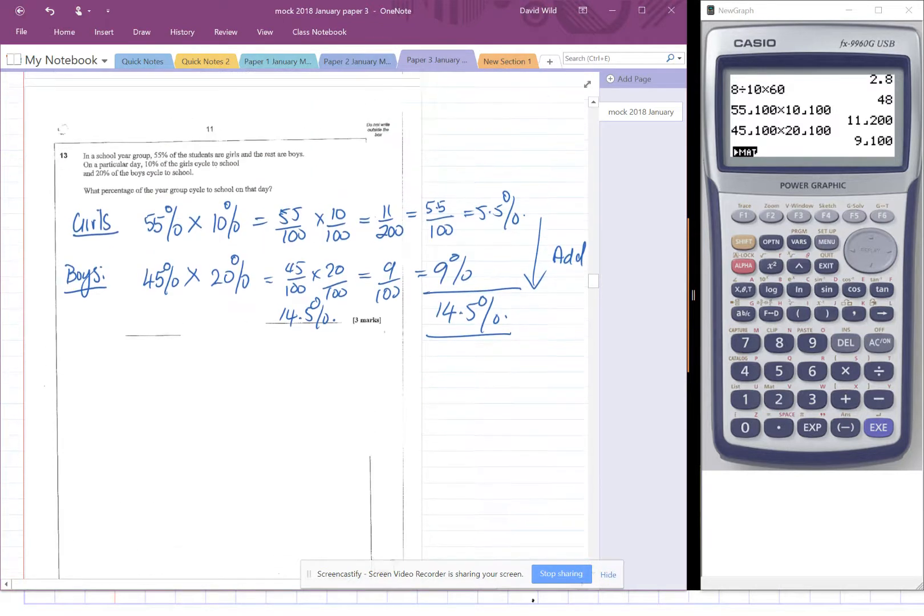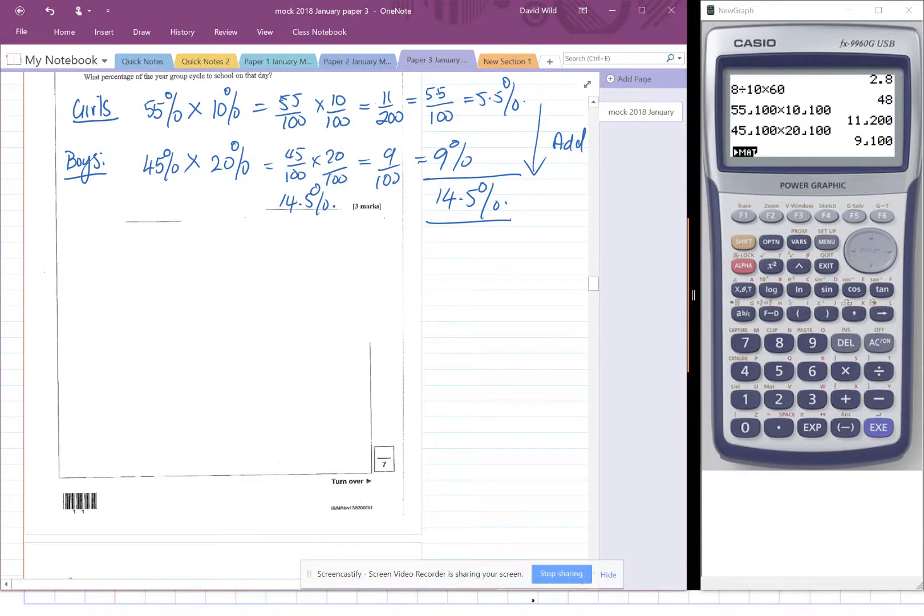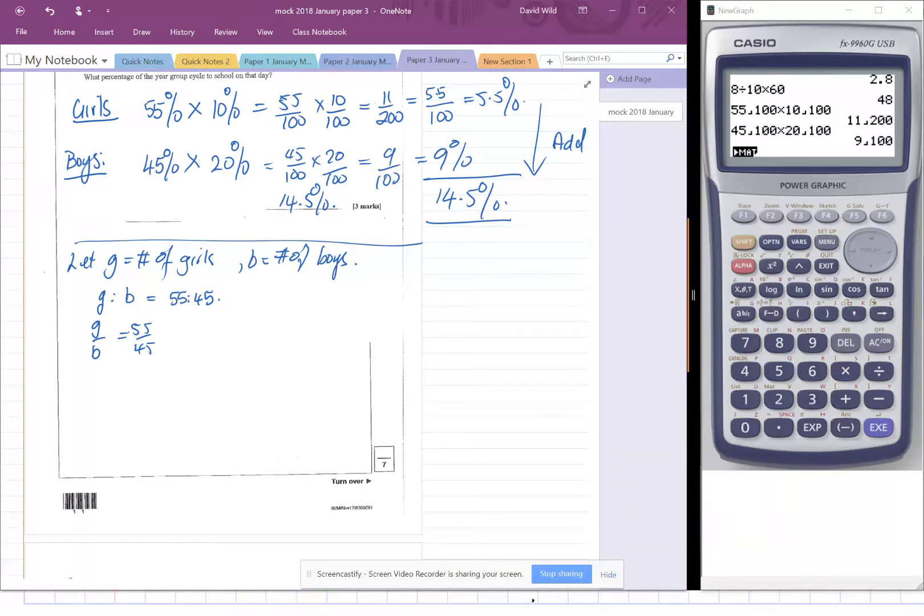Here's another way to do this. We could if we want to do it more algebraic we could say let G equals the number of girls, we don't know how many girls there are in the school and B is the number of boys. Okay. And we know that the girls in the ratio to boys is 55 to 45. In other words, G over B is 55 over 45. So we could do that and then we want to say what percentage of the year group cycle to school.